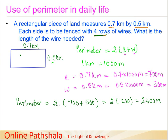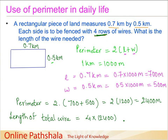This 2400 meters is the length of wire required to go around the rectangular field once. But we need 4 rows of wires, so we need to go around 4 times. Therefore, the total length of wire equals 4 times 2400. Calculating this: 4 times 2400 gives us 9600 meters, which is equal to 9.6 kilometers.